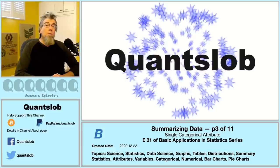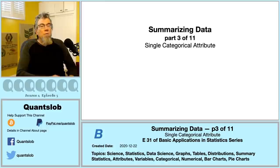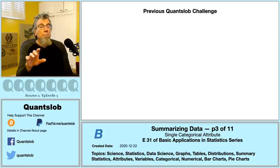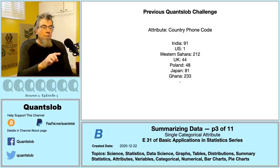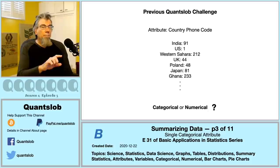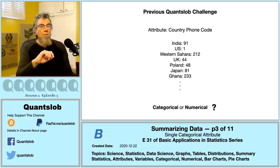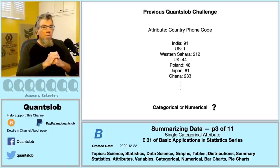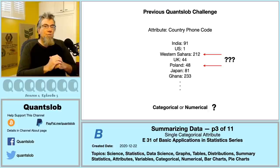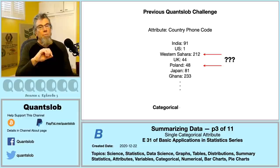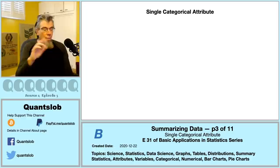Greetings and welcome to another installment of QuantSlob — this is episode 31 in our basic application series. We're motoring on with part three. The previous challenge: is 'country phone code' categorical or numerical? The phone codes are all numeral symbols, but they don't really possess easily ascribable units — they're unitless. More to the point, would it be natural to say that western Sahara is greater than Poland in terms of country phone code? That would be a pretty awkward statement — therefore, country phone code is best considered categorical.